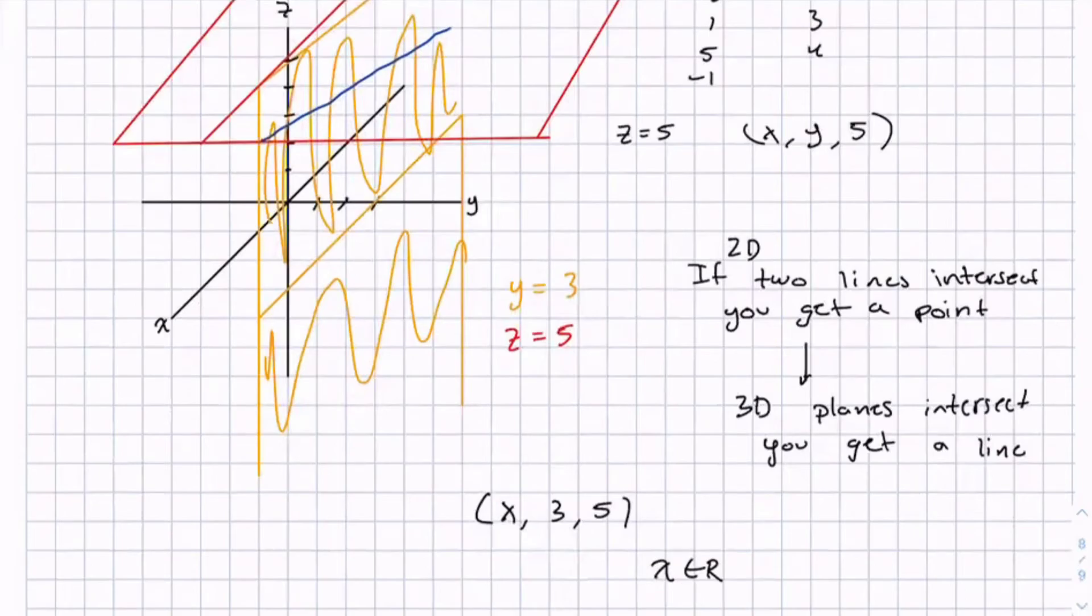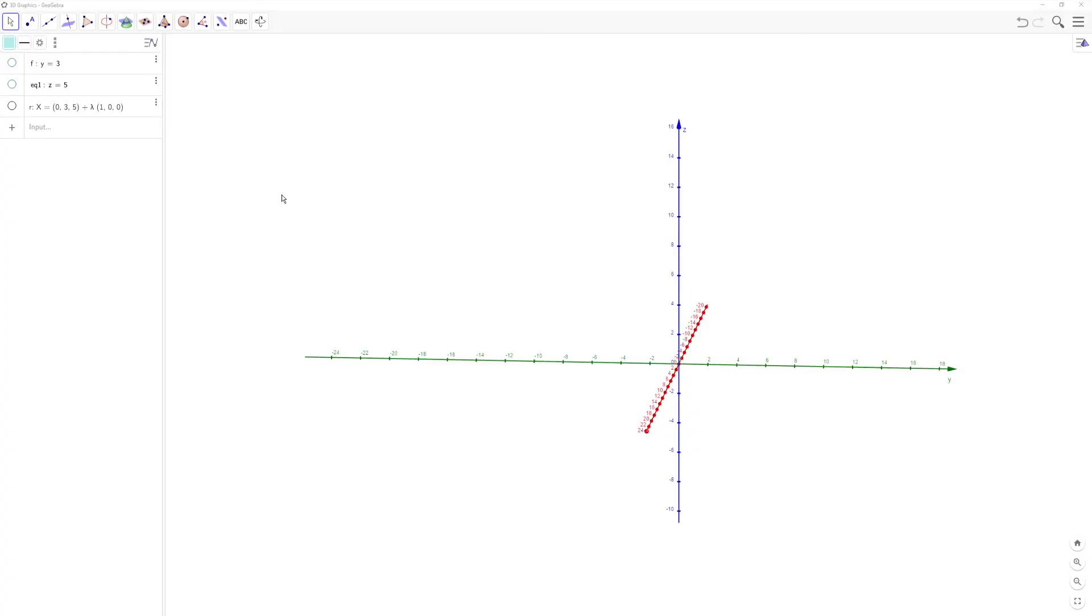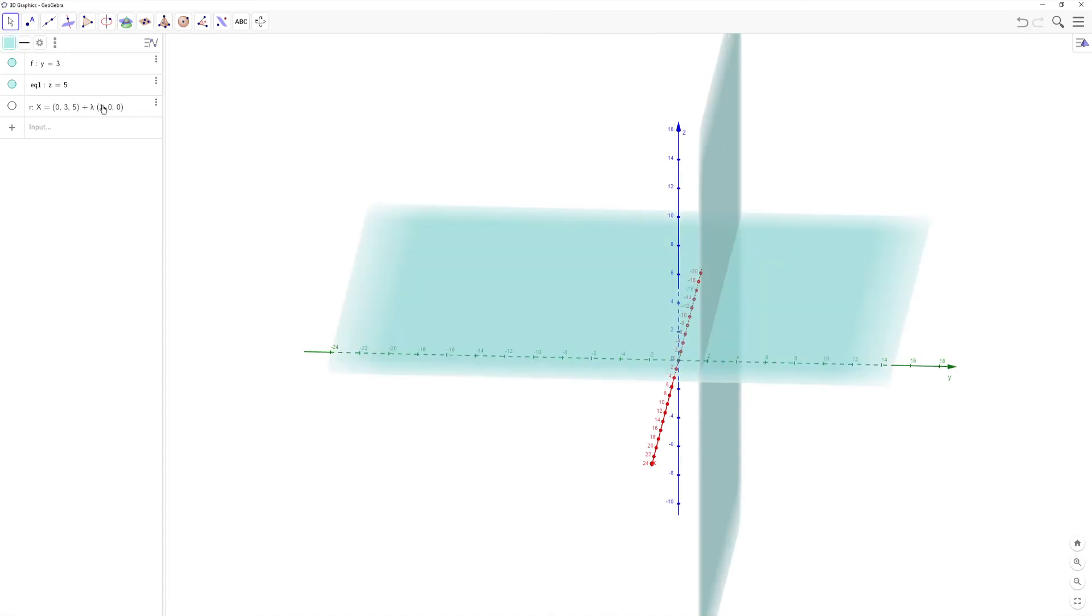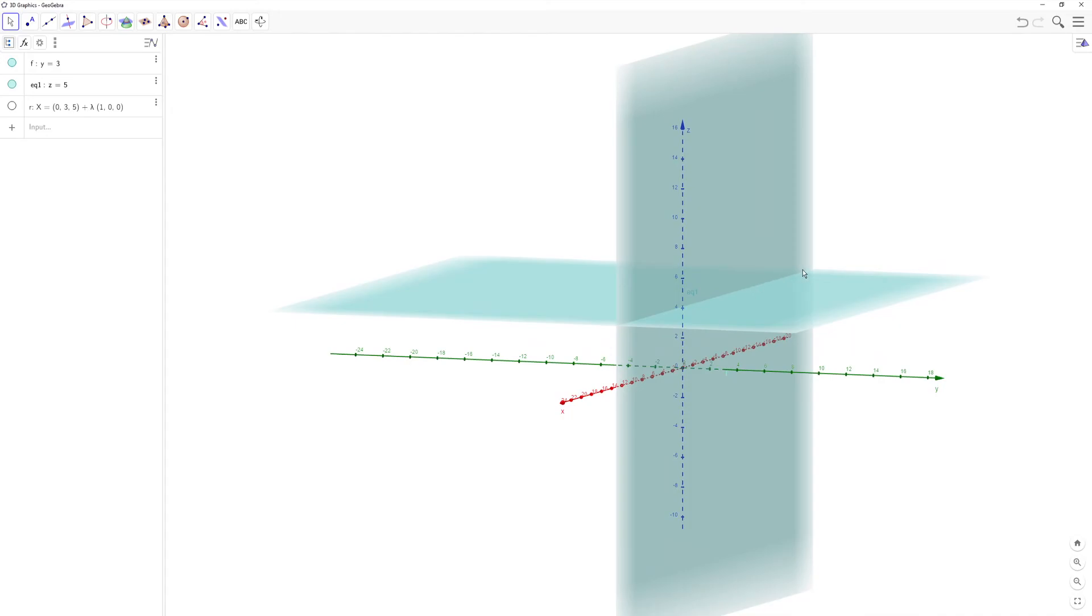And let me illustrate this with a 3D grapher. So we have the equations y equals 3, which creates a plane. z equals 5 creates a plane. This is a lot easier to see. This intersection right here. And this creates a line.